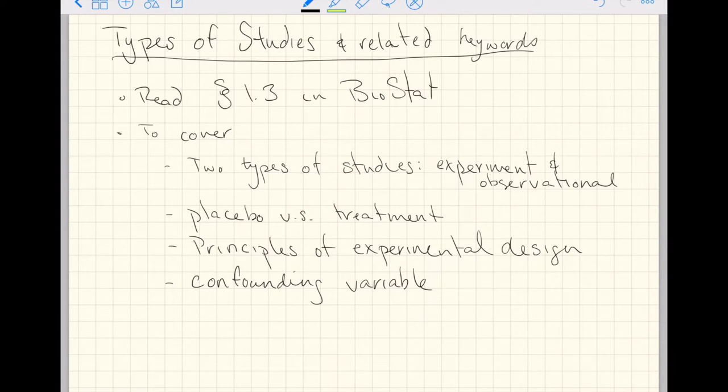So we'll start with the two different types of studies. I'll probably actually go in the opposite order, observational studies first and then experiments. I'll talk about placebos and treatments, then principles of experimental design, and then last I'll introduce one new type of variable that creeps into this world of studies a lot.